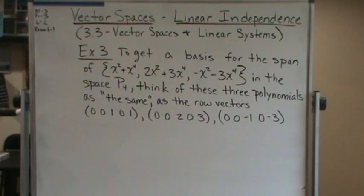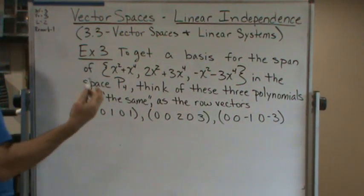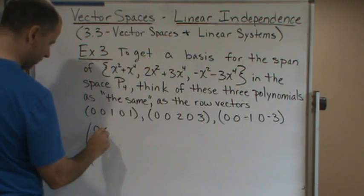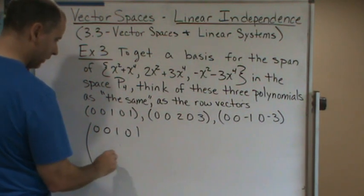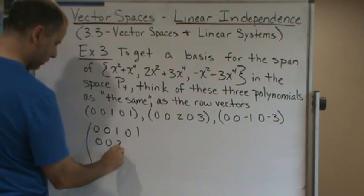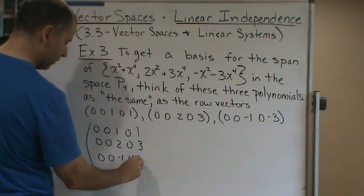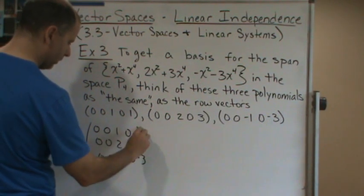And so what we could do is use these row vectors in Gauss' method to reduce them. So let's do that. So 0, 0, 1, 0, 1, then 0, 0, 2, 0, 3, and 0, 0, negative 1, 0, negative 3.